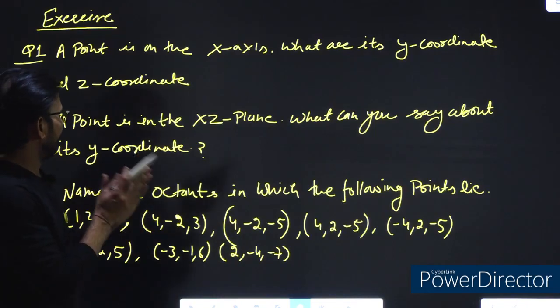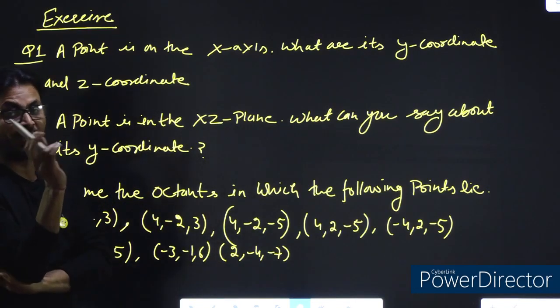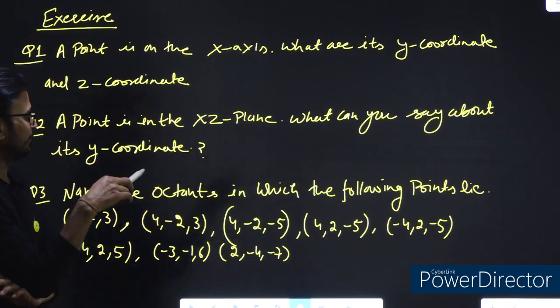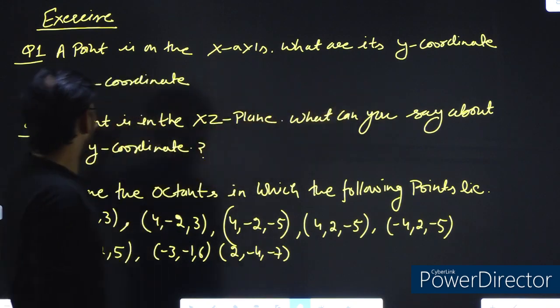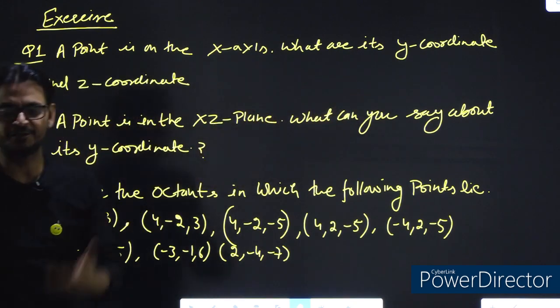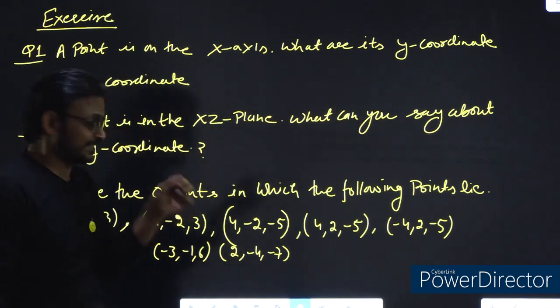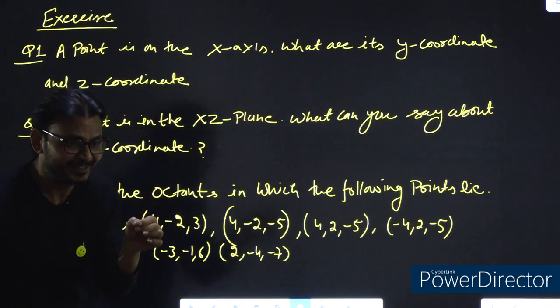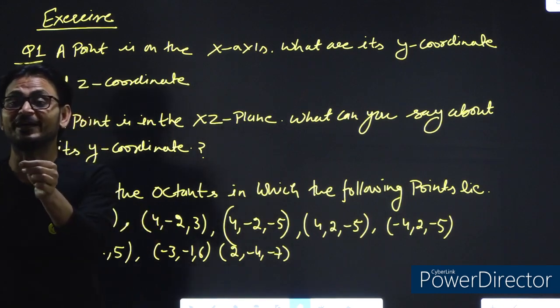A point is on the x-axis. What are its y-coordinate and z-coordinate? There is one point on the x-axis, so what are y and z?